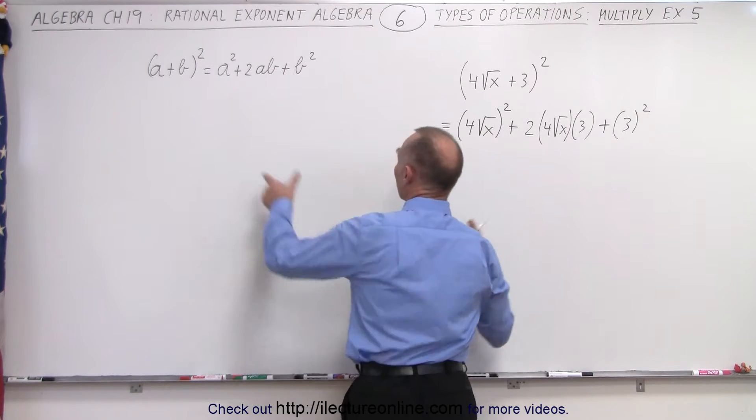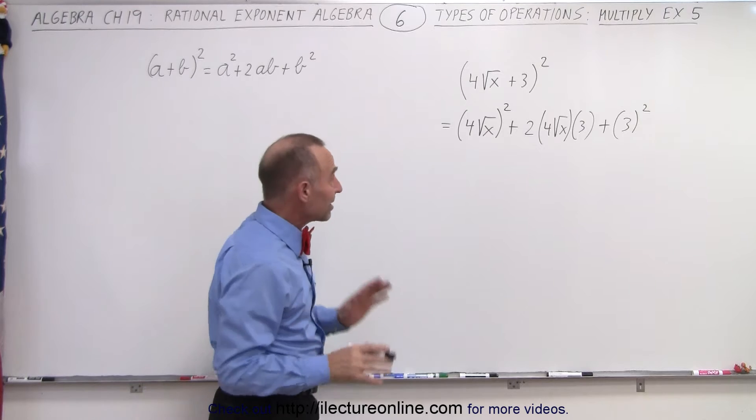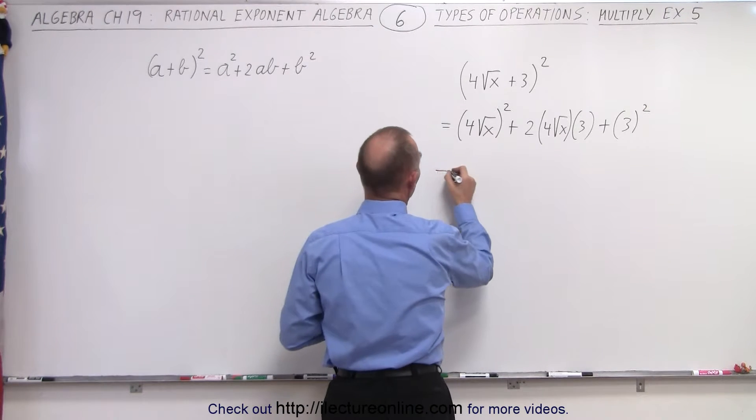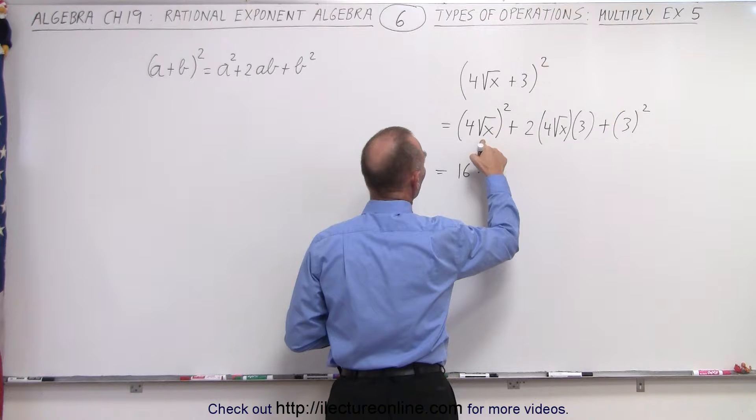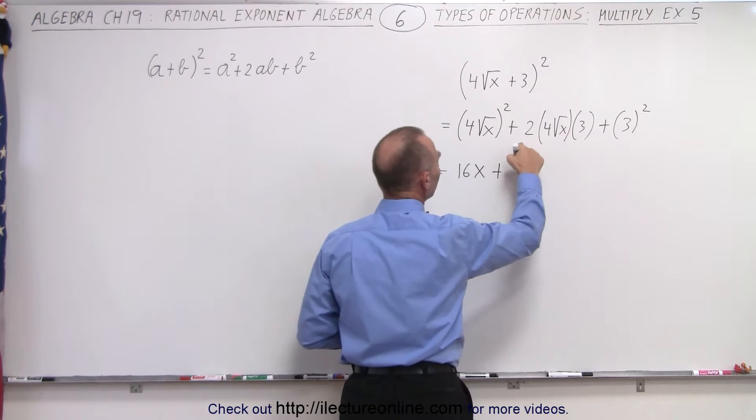So that's the same general principle as what we've applied over there. Okay, so simplifying this, our first term becomes 4 squared which is 16, and the square root of x quantity squared is simply x plus 2 times 4